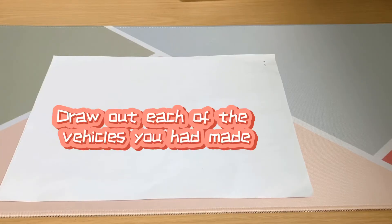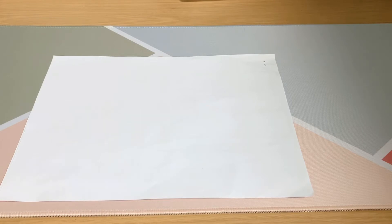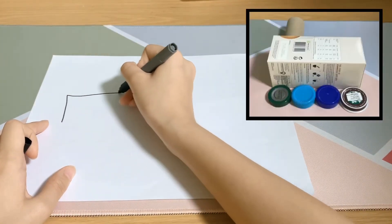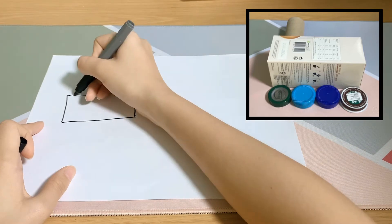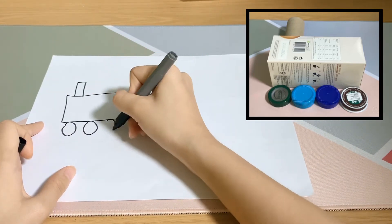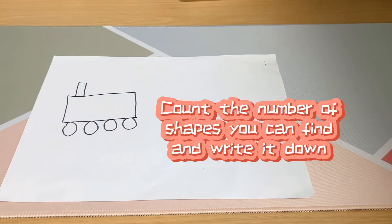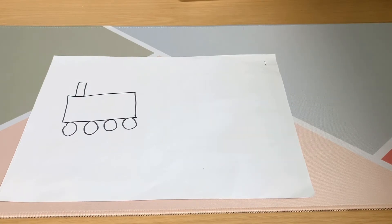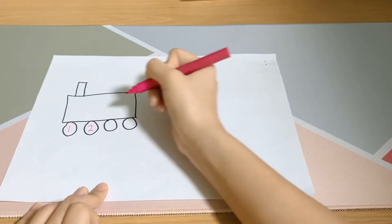Draw out each of the vehicles you had made. Count the number of shapes you can find and write it down. I can see one circle, two circles, three circles...